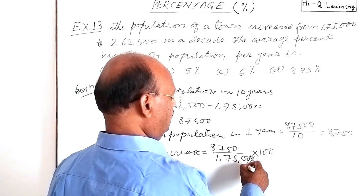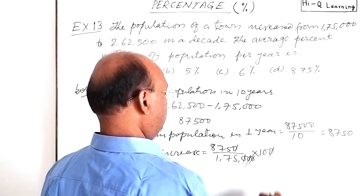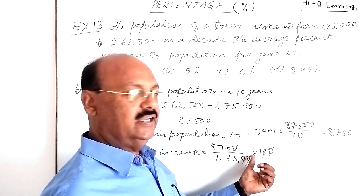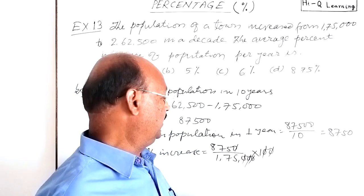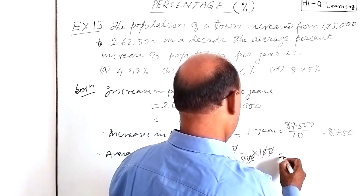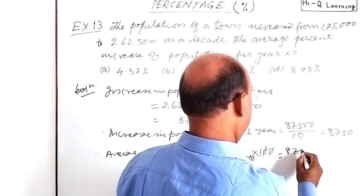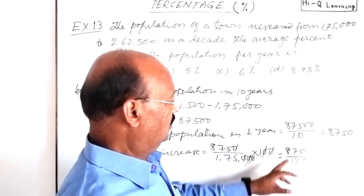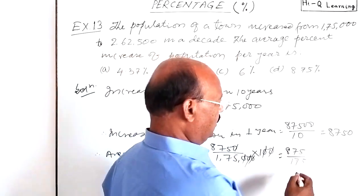So these three zeros will be cancelled out from numerator and denominator. After cancelling out these three zeros from numerator and denominator, we are getting 875 divided by 175. We can cancel it with 25.